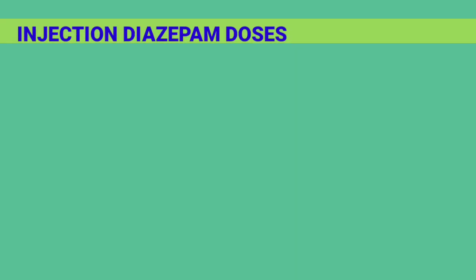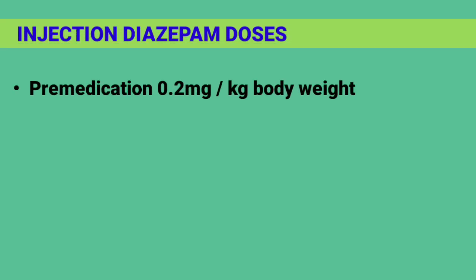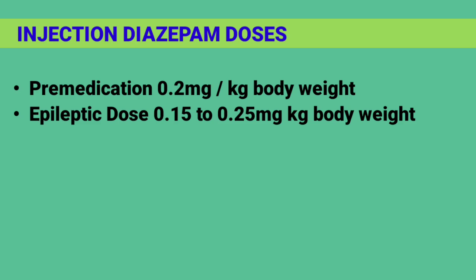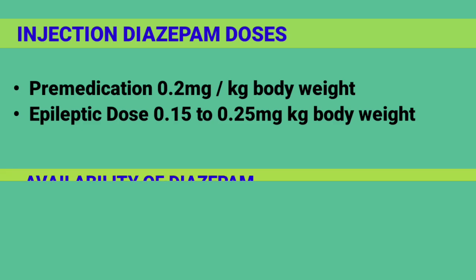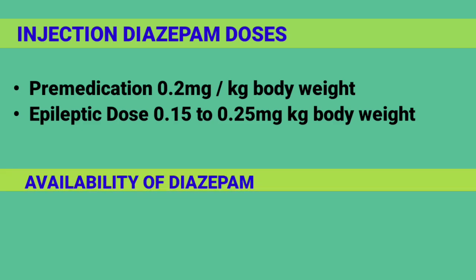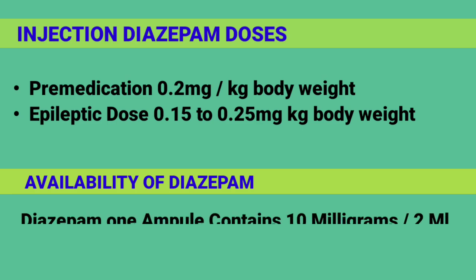Injection Diazepam doses: Pre-medication 0.2 mg/kg body weight; Epileptic dose 0.15 to 0.25 mg/kg body weight. Availability: 1 ampoule contains 10 mg/2 ml.